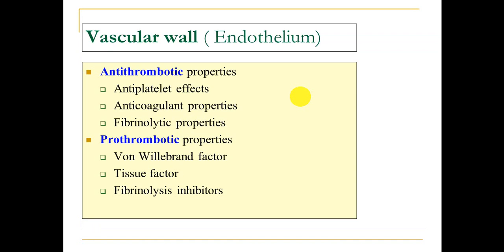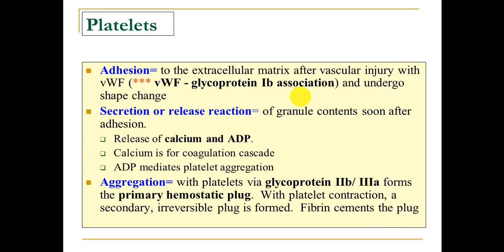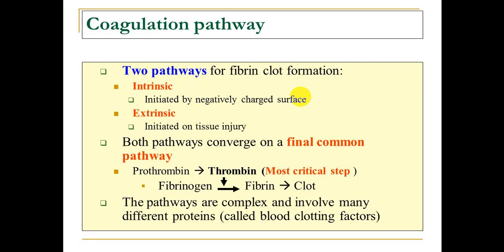Normally, the vascular wall has both antithrombotic and prothrombotic properties, keeping our blood in a balanced state. Platelets are the major player in bleeding disorders. Platelet adhesion needs von Willebrand factor, a clotting factor synthesized by the endothelial surface of blood vessels, and platelet receptors called glycoprotein 2b and 3a. Coagulation has both intrinsic and extrinsic pathways, both ending with a common final pathway leading to thrombus formation.